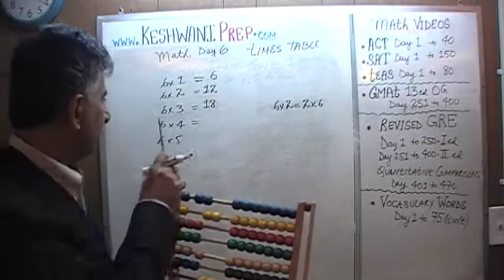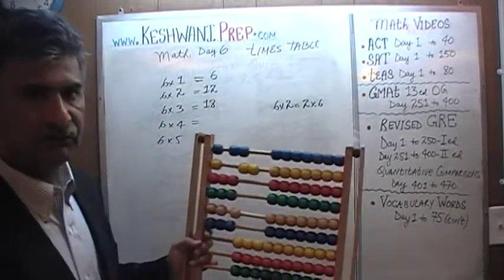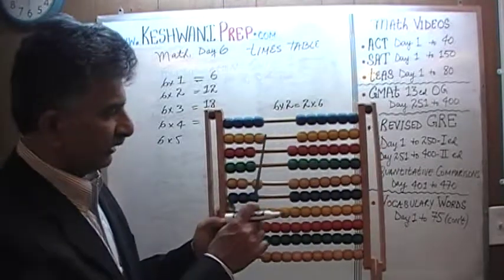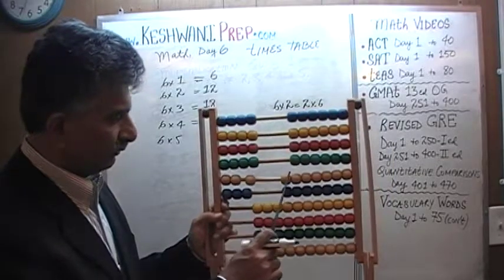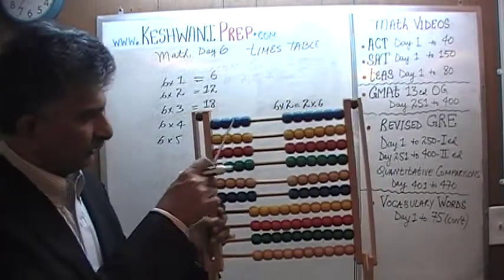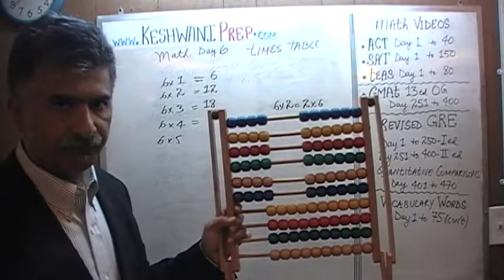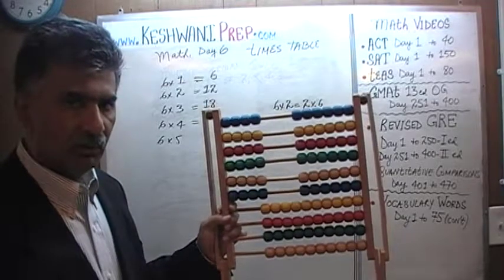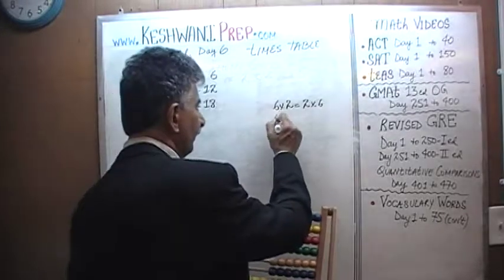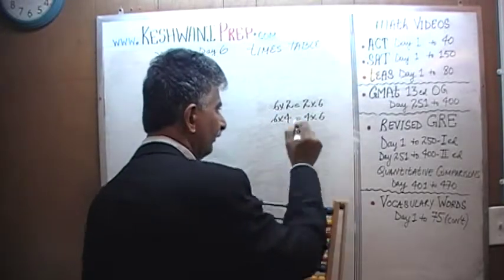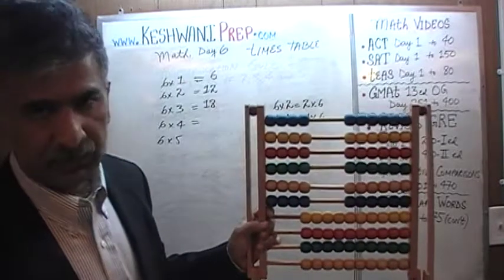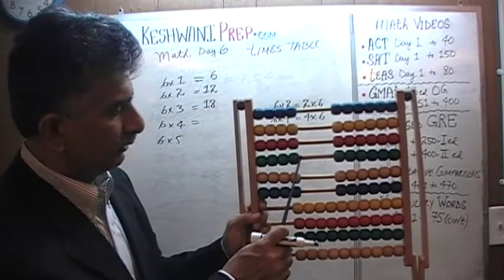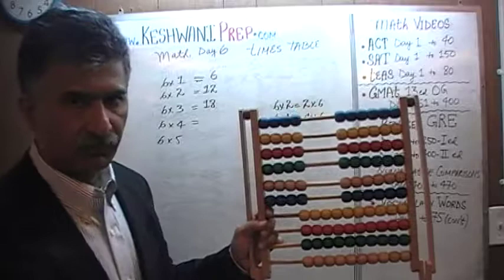How about six fours? Six fours is the same as four sixes. We need six groups of four: first group, second group, third group, fourth group, fifth group, and six groups. Six fours — we just count by fours using our fours table: four, eight, twelve, sixteen, twenty, and twenty-four. Six fours are twenty-four.